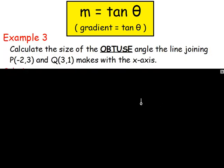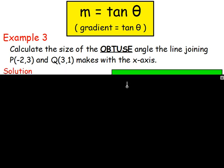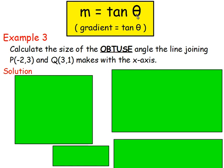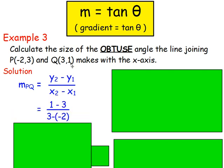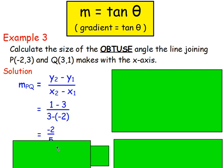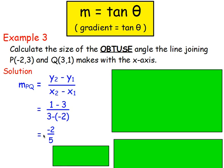Example three: calculate the size of the obtuse angle the line joining these two points makes with the x-axis. Again, find the gradient first: y2 minus y1 over x2 minus x1 gives 1 minus 3 over 3 minus negative 2. Taking away a negative means you add, giving negative 2 over 5. Whether you swap the points or not, you get the same result: the gradient is negative 2 fifths.